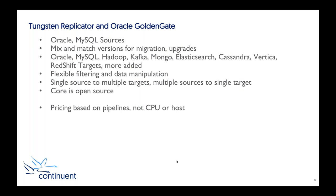We apply to many of the same targets as Oracle Golden Gate — Oracle, MySQL, Hadoop, Kafka, MongoDB, Elasticsearch, Cassandra, Vertica, Redshift. We are adding more targets all the time — we added three new applier targets in the 5.2 release at the end of last month, and we expect to add another three to five in 5.3, with more in 6.0 at the end of the year. They will all have the same functionality: the same core extraction from Oracle and MySQL, the same filtering and data manipulation, multi-target and multi-source capabilities.